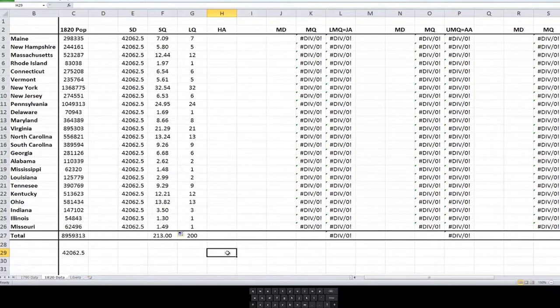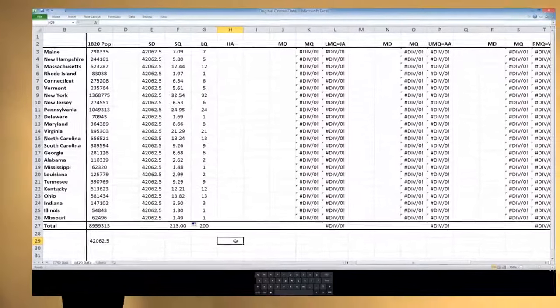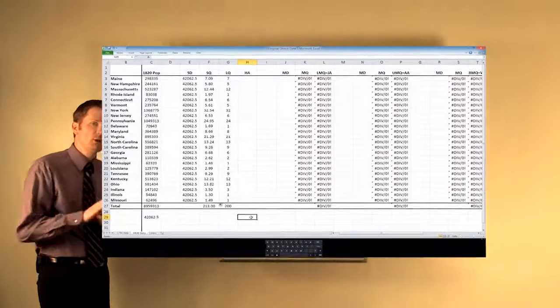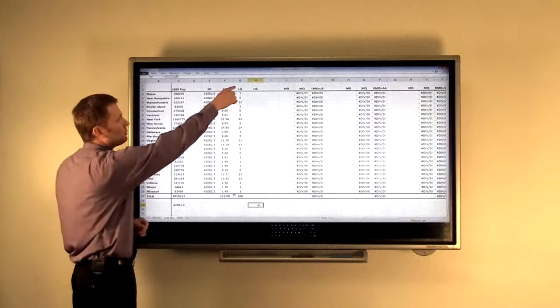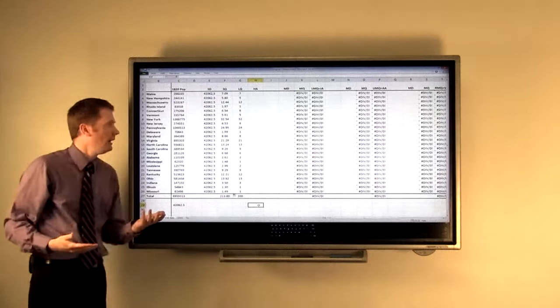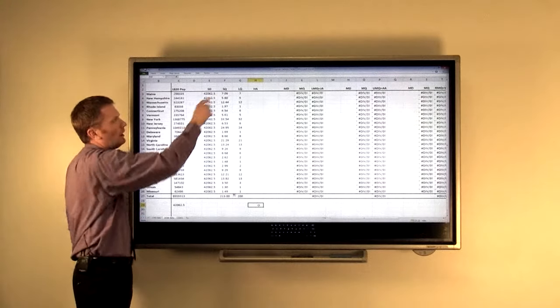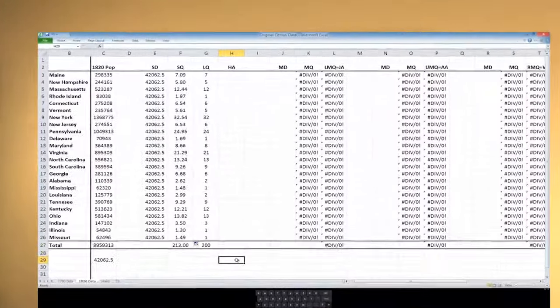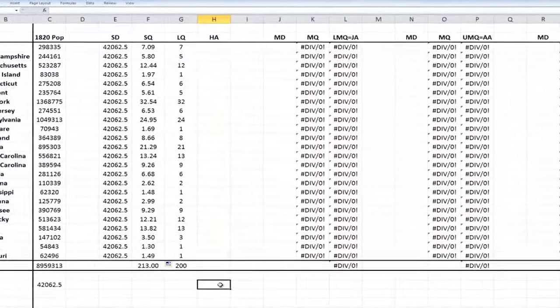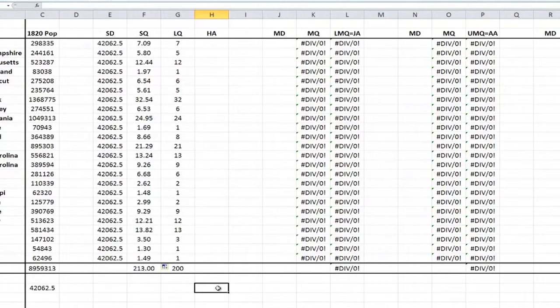So, we've got all these ugly decimal remainders, and what do we actually do with them? So, remember, Hamilton said, we round everybody down. We totally ignore the decimal portion. So, what I've put in this next column is LQ for lower quota. So, 7.09 gets round down to 7. We just ignore the decimal. 5.80 becomes 5. Even numbers really large, like 24.95 goes down to 24. And I've had Excel go ahead and add this up for me. We get 200. So, according to Hamilton's method now, we are short 13 seats. And we have to decide where those 13 seats go.